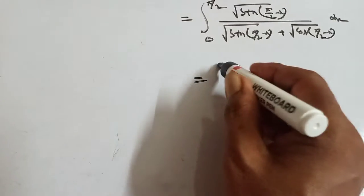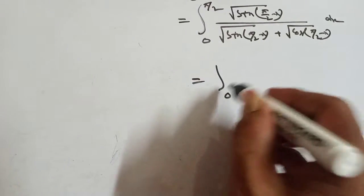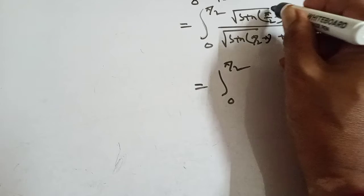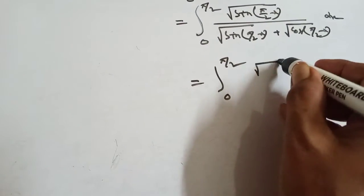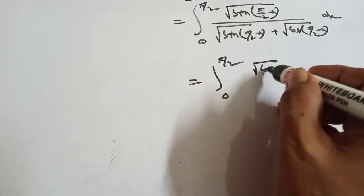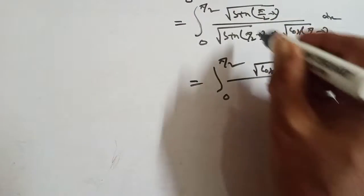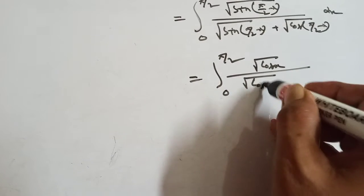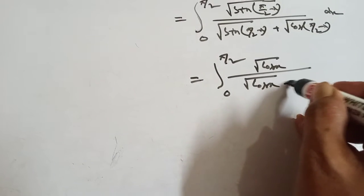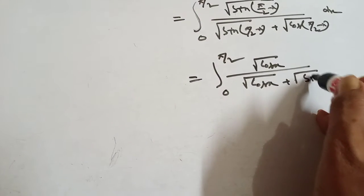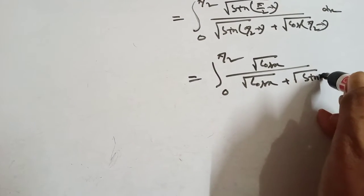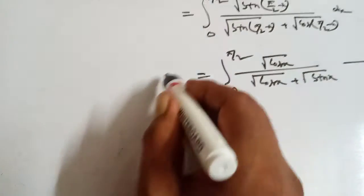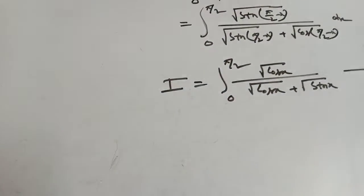That means sin(π/2 minus x) equals cosx. So the numerator becomes √cosx, and the denominator becomes √cosx plus √sinx. This is the second equation, and this is also equal to i.